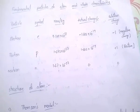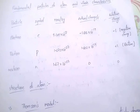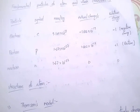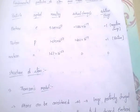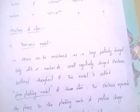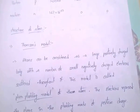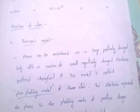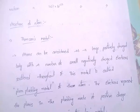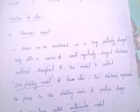So, once again: electron is a negatively charged particle, proton is a positively charged particle, and neutron has no charge. Coming to the structure of atom, there are mainly three models developed by three scientists. The first one is Thomson's model, the second one is Rutherford's model, and the third one is Bohr's model.